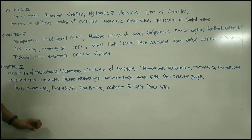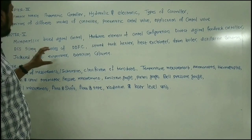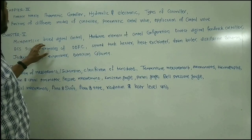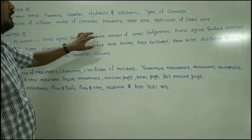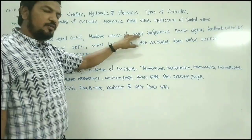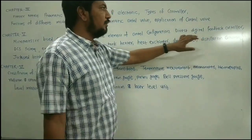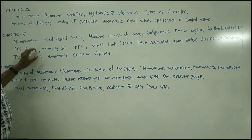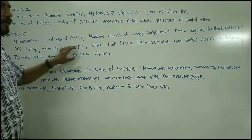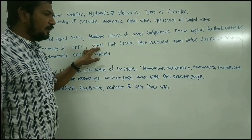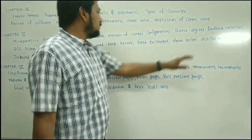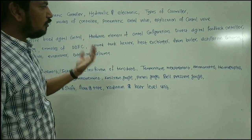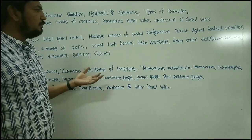Chapter five is dedicated to microprocessor-based digital control systems — that is, advanced control systems. You have to study how the microprocessor-based digital control system works, what the hardware elements of this control configuration are, the direct digital feedback controller and its types, and the distributed control system (DCS). Examples of direct digital feedback control systems include: stirred tank heater, heat exchanger, drum boiler, distillation columns, jacketed kettle, evaporator, and extraction column. You have to sketch diagrams and make control configurations for these.